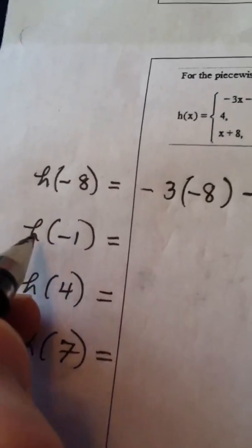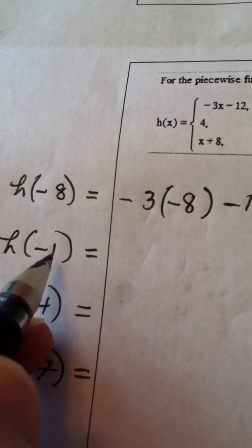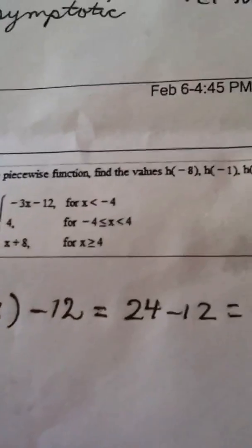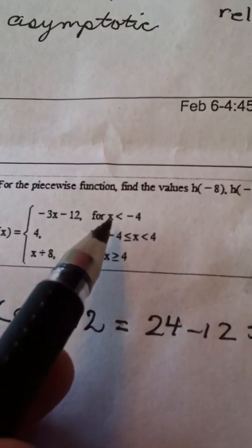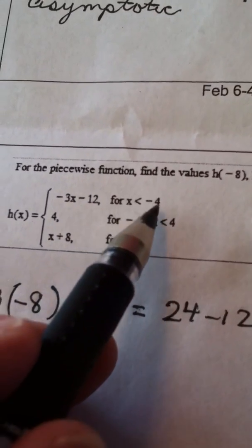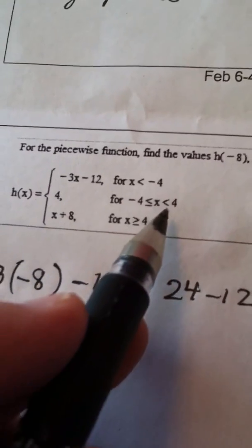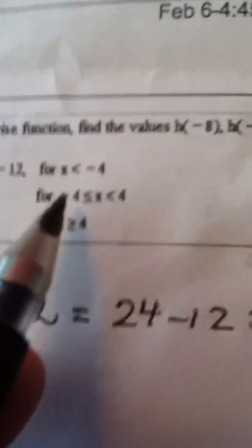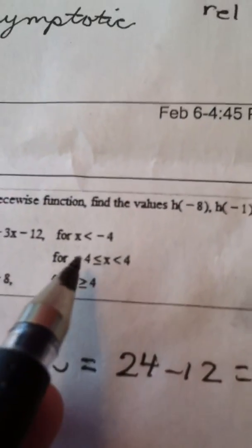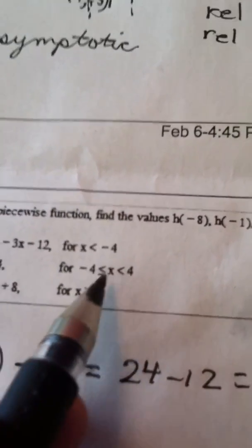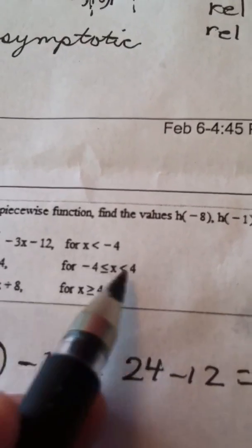Let's try another one. h of negative 1. Negative 1 is my input. When I look up here, negative 1 less than negative 4? No. But when I look here, negative 1 is definitely between negative 4 and positive 4. So that tells me I'm on the middle tier.